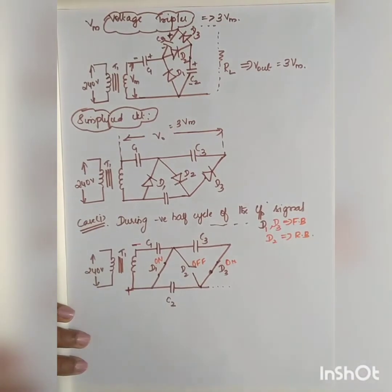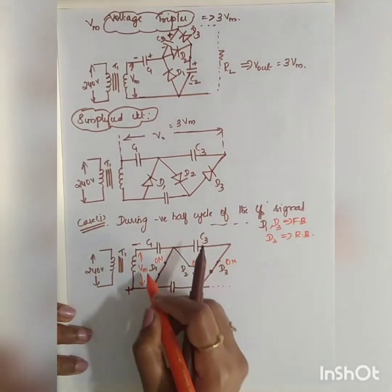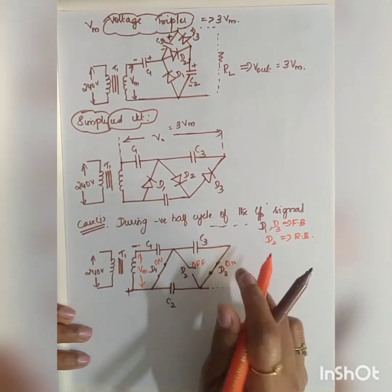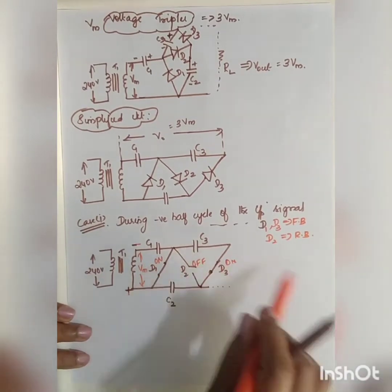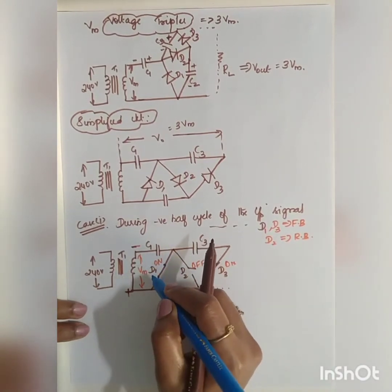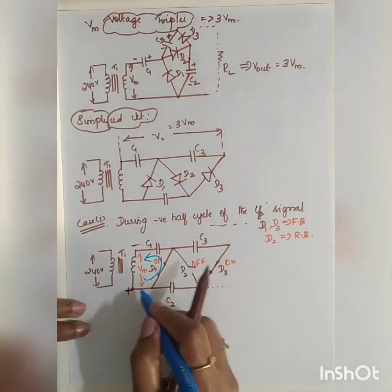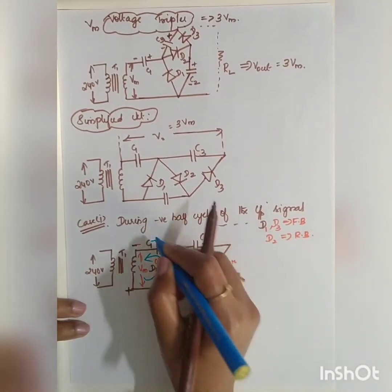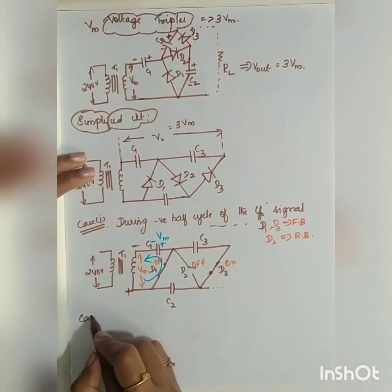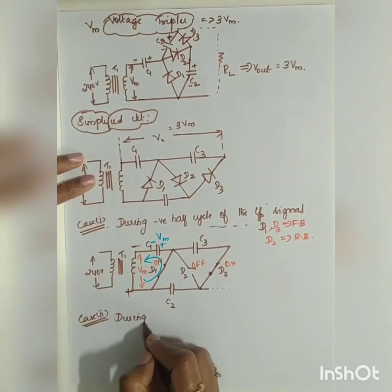During the negative half cycle, the voltage is Vm. D1 is on and D3 is also on, but the potential at C3 is zero so D3 will not conduct and C3 will not charge. D1 turns on with the negative voltage and charges capacitor C1 to Vm.